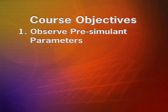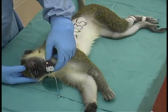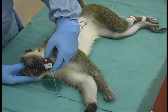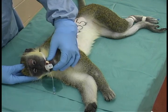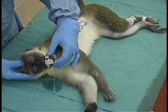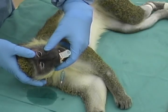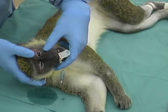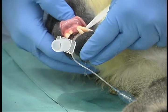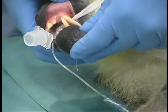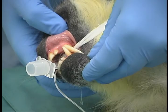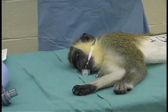The first objective is to observe pre-simulant parameters of the non-human primate. To accomplish this, you will perform a physical exam. First, start with the head and work your way down. Observe the eyes and note the size of the pupils. Look at the mouth, the teeth, and the gums and note the amount of salivation present.